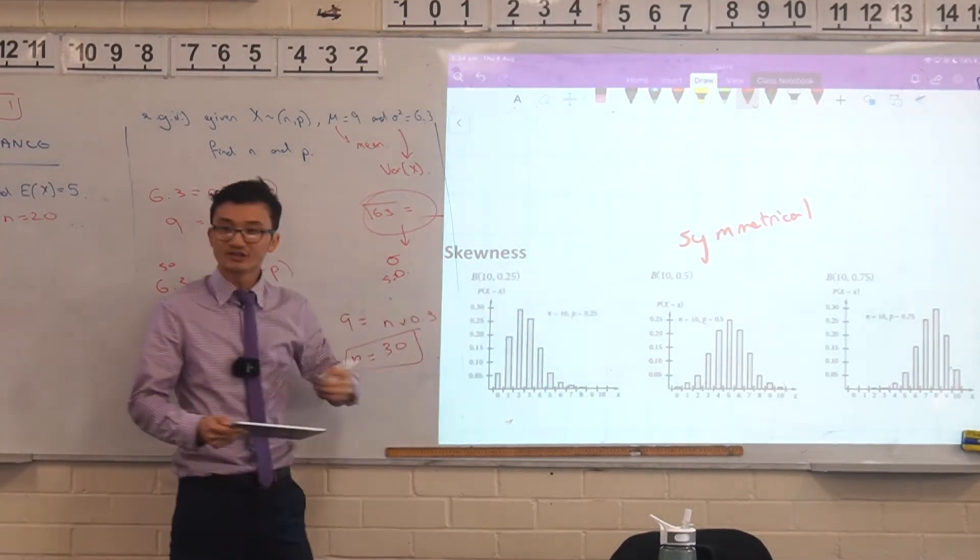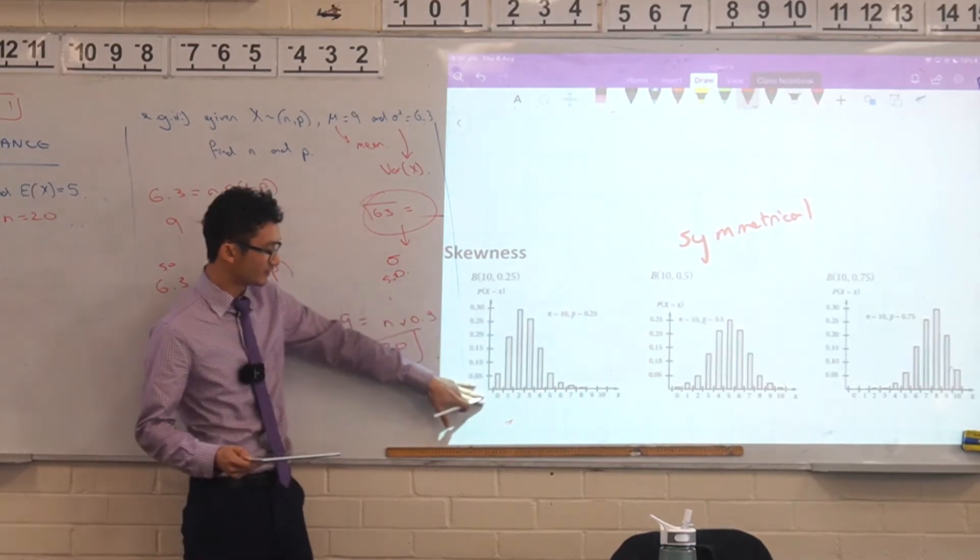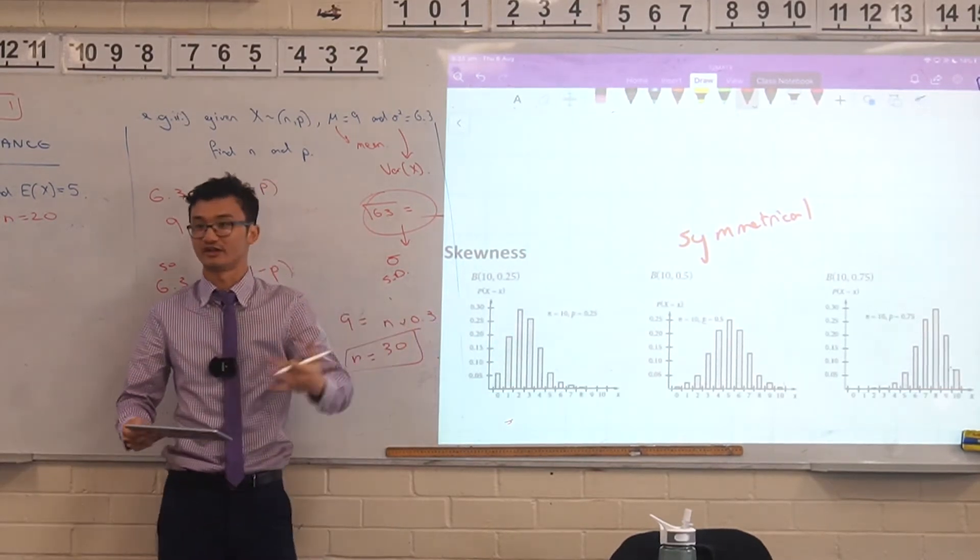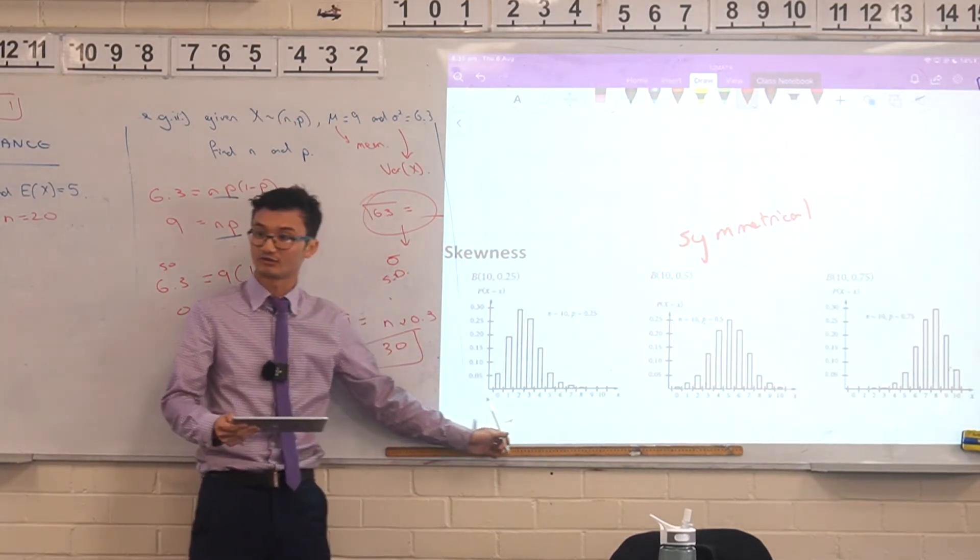And so if you change the situation, if you change the probability of success, right, you'd expect less kind of success because there's less chance of you actually getting that particular thing. So you'd get the lower. These are how many successes you'd expect, right? Does that kind of make sense?